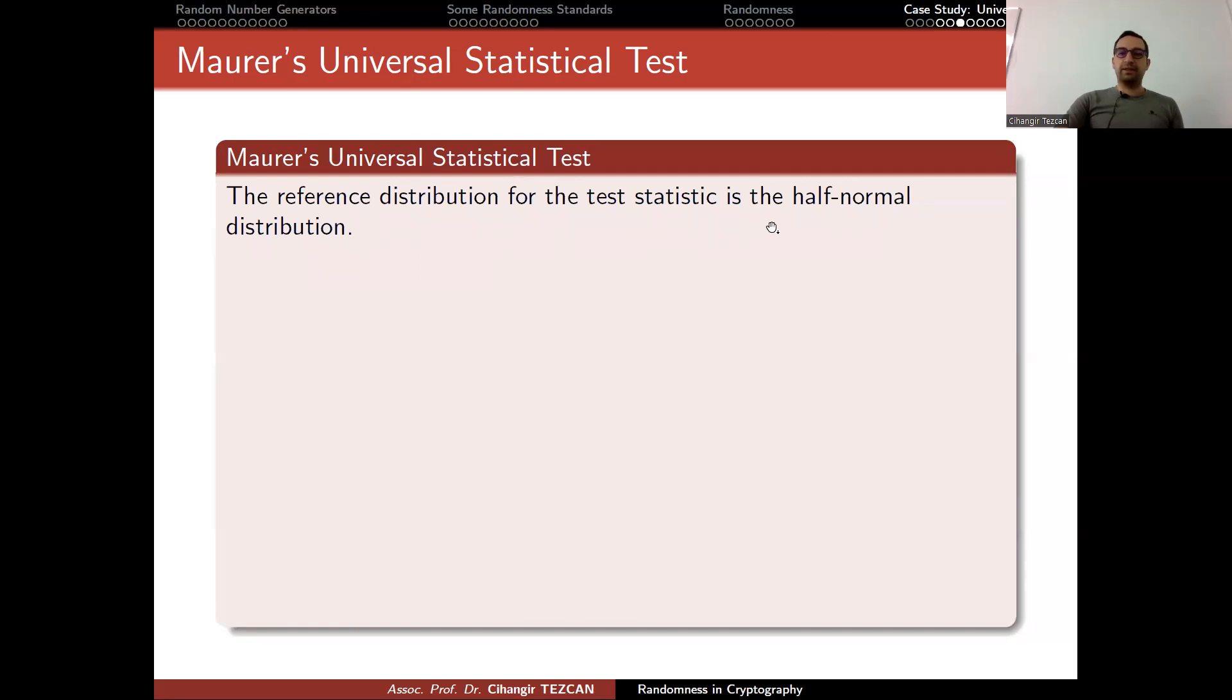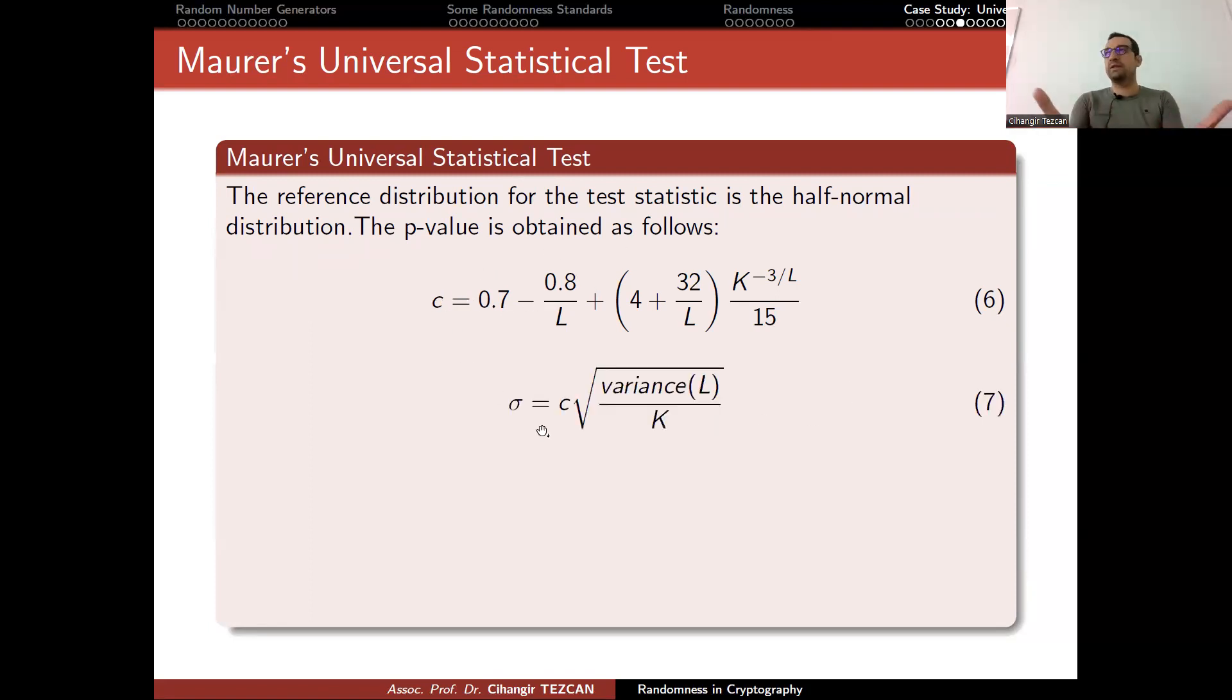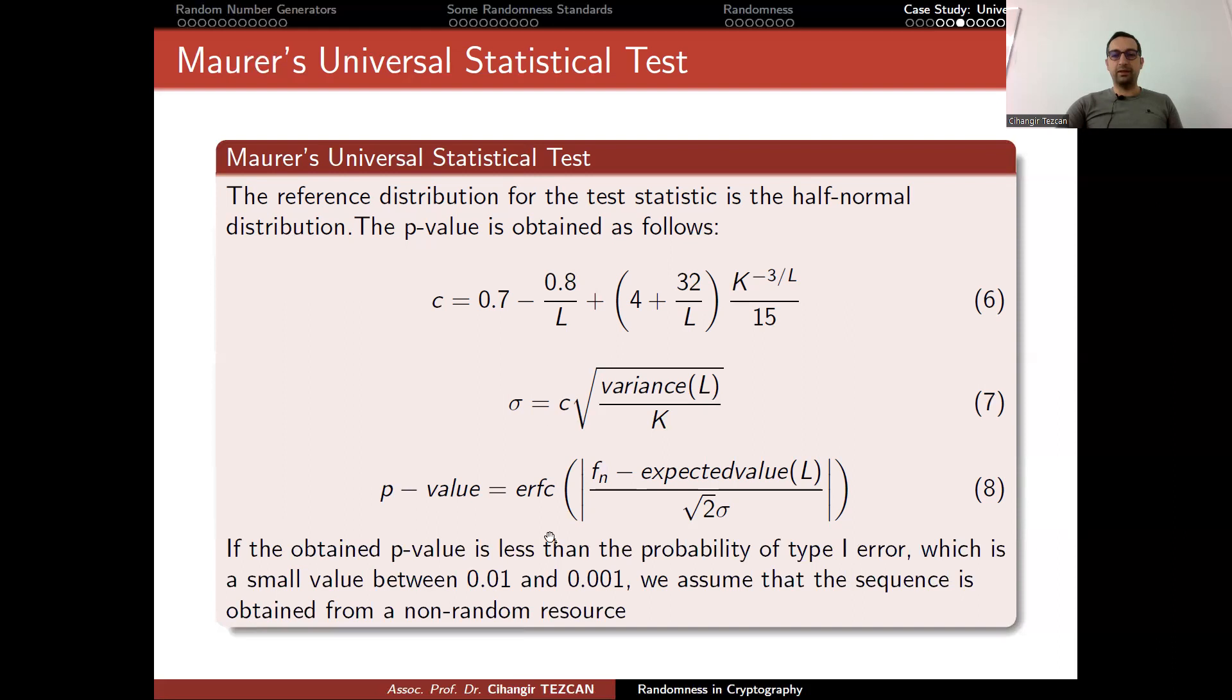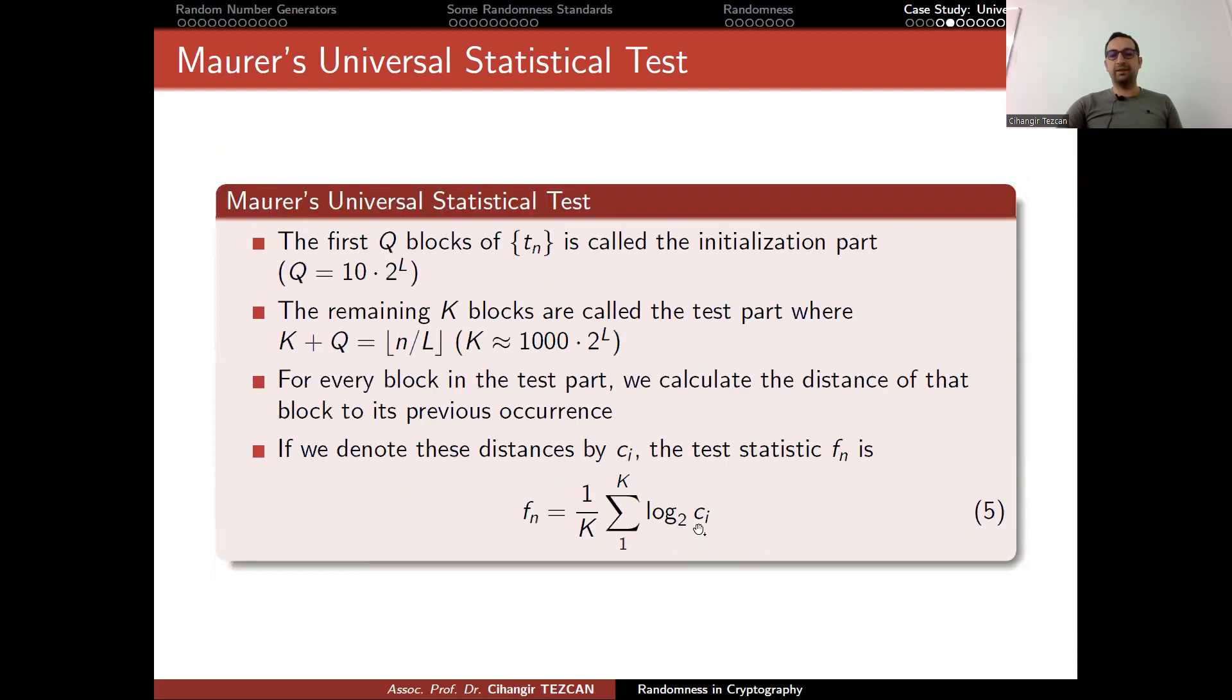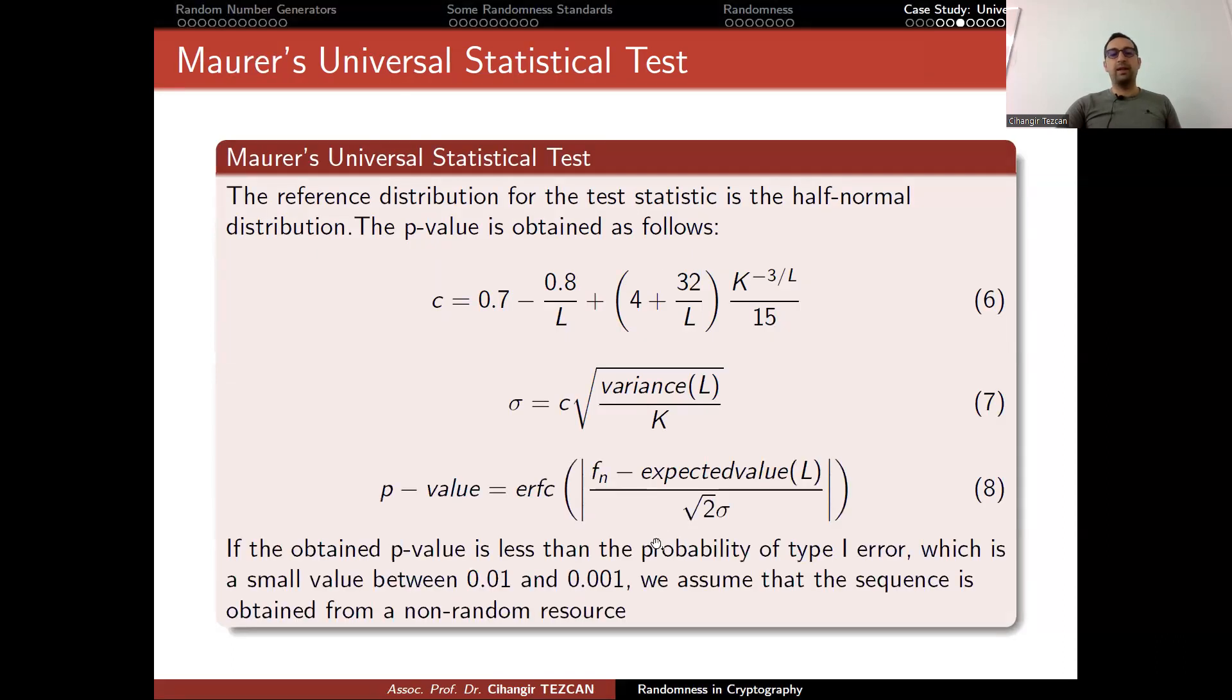The reference distribution for the test statistic is the half normal distribution. The p-value is obtained from this calculation. You cannot just understand this just by looking at the slides. You have to go to the documentation and understand why this is the case. But at the end, you calculate this value from the variance of L and this value. The p-value is calculated from the error function like this. ERFC, you can find a very nice implementation in C. It is not hard to find it. So you can easily write this code.